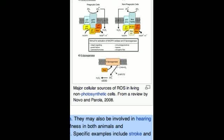ROS can damage DNA, RNA, and proteins, which, in theory, contribute to the physiology of aging.